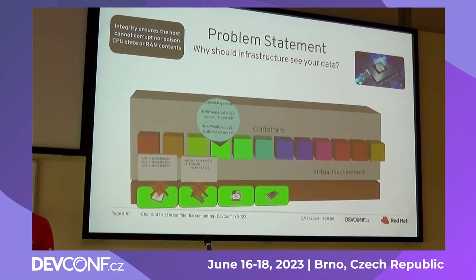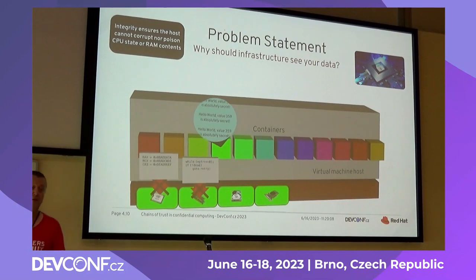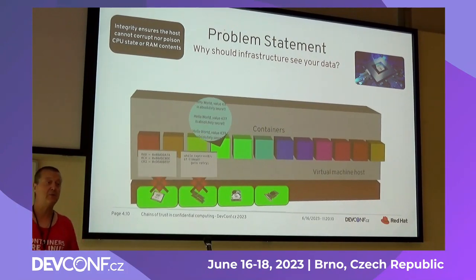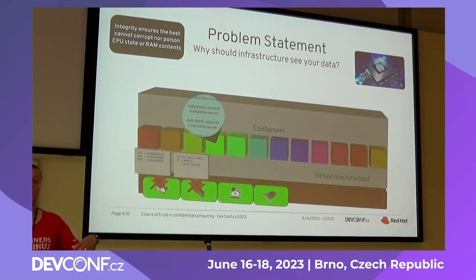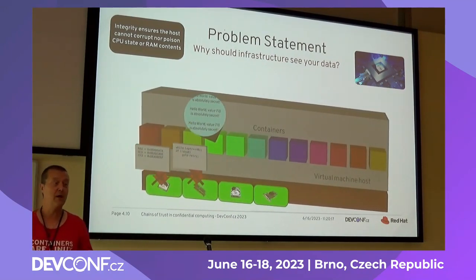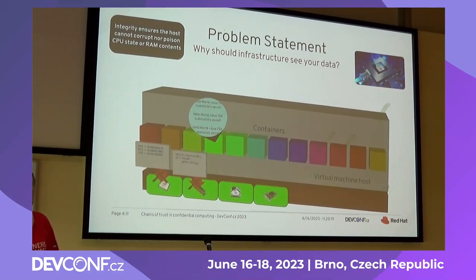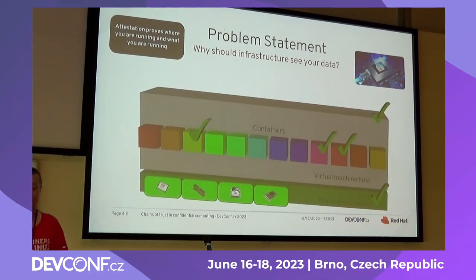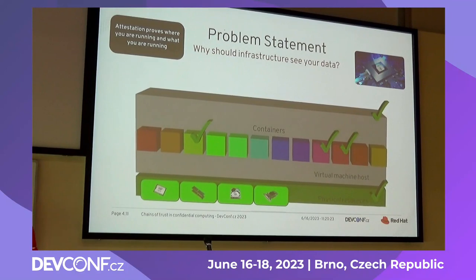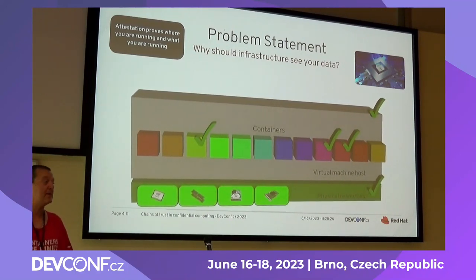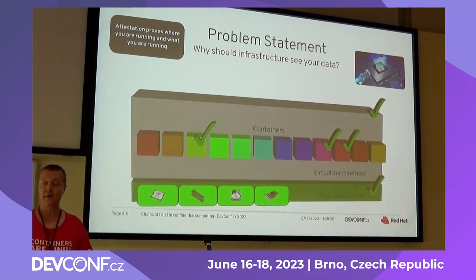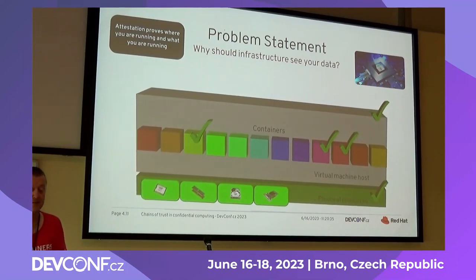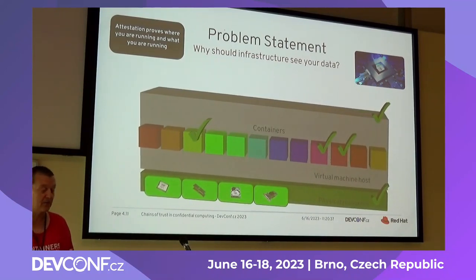Later, some technologies were added to protect the integrity of the CPU state, because if you run in a virtual machine, you don't want your virtual machine to be able to change the register state and jump anywhere in the code. And finally, you need to make sure that what you run is exactly what you want to run. So attestation is there to prove that you are running on the right context, in the right environment, and that you are running what you think you are running.